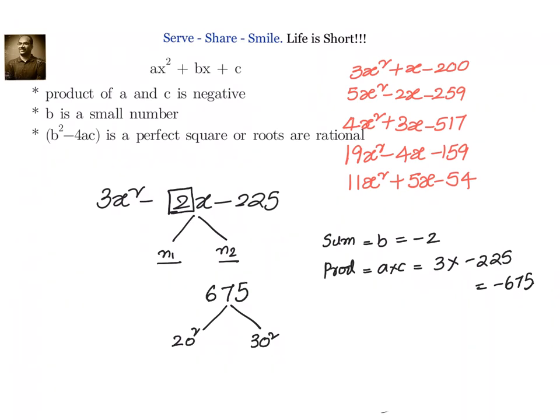Whatever the number we are taking, it will be coming between 0 square to 10 square or 10 square to 20 square, 20 square to 30 square. Like that we will continue. Now 20 square is 400, 30 square is 900, 675 comes between this.